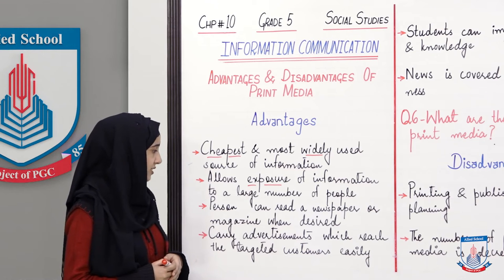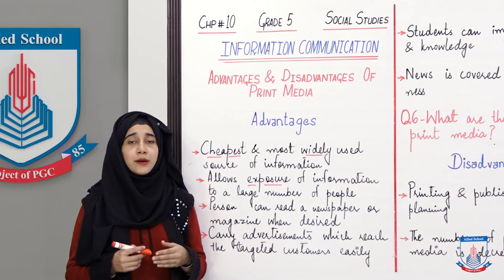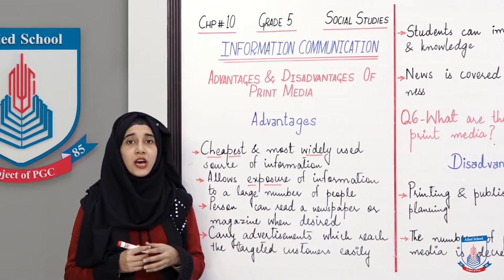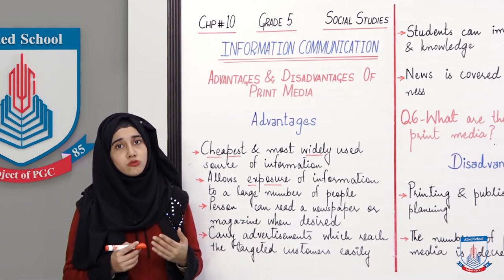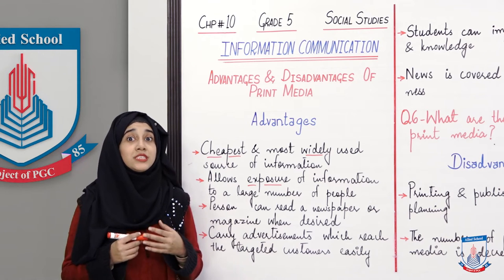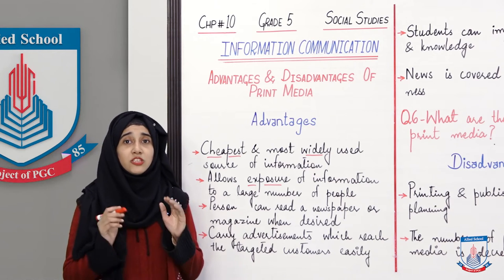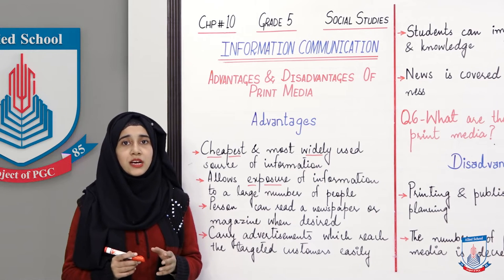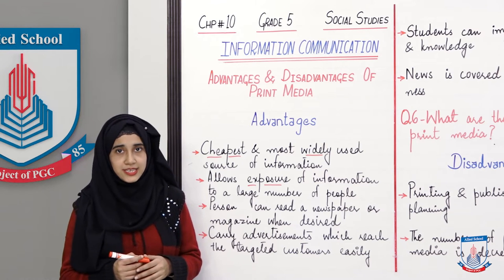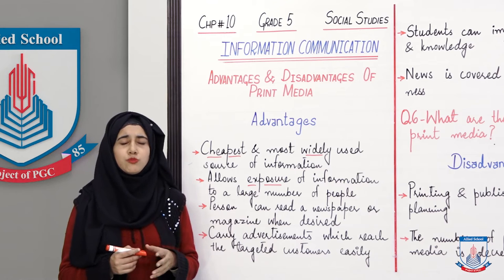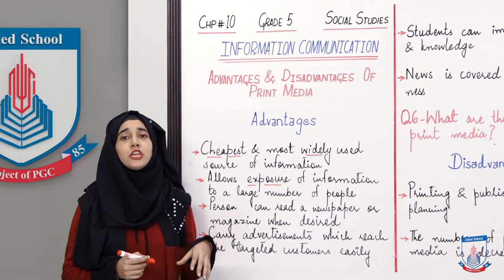Print media carries advertisements which reach the targeted customers easily. In newspapers you will notice advertisements — for car sales, house sales, result announcements. The targeted audience that people want to reach can be reached through print media. Information with many numbers, like results, can also be published in newspapers since readers can go through it carefully.